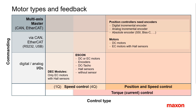Encoder feedback is mandatory for the position controllers, be it EPOS or MAX. Depending on the exact controller type, a variety of encoders can be used. EPOS and MAX can drive brushed motors or brushless motors with Hall sensors.